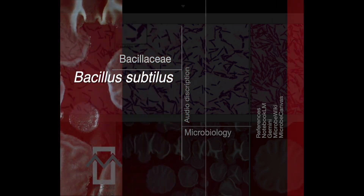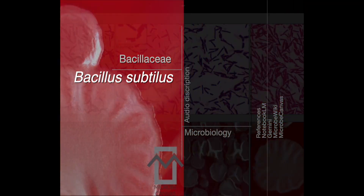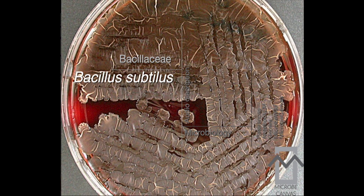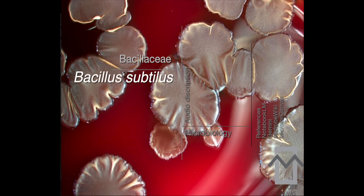Let's dive in. The really interesting thing about B. subtilis is its dual nature. On one hand, it's this incredibly well-studied model organism, hugely important in research and industry — like for enzymes. But clinically speaking, it's primarily an opportunistic pathogen, generally pretty low risk for healthy people.